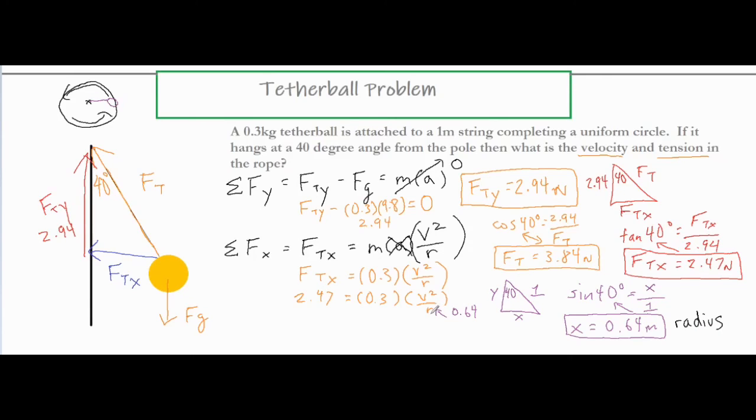Now we have everything we need. We can go ahead and put the 0.64 in right over there. We can solve for this a couple different ways. What I would probably do is divide both sides by 0.3. And then we would have 2.47 over 0.3 equal to V squared over R. And then I would multiply both sides by 0.64.